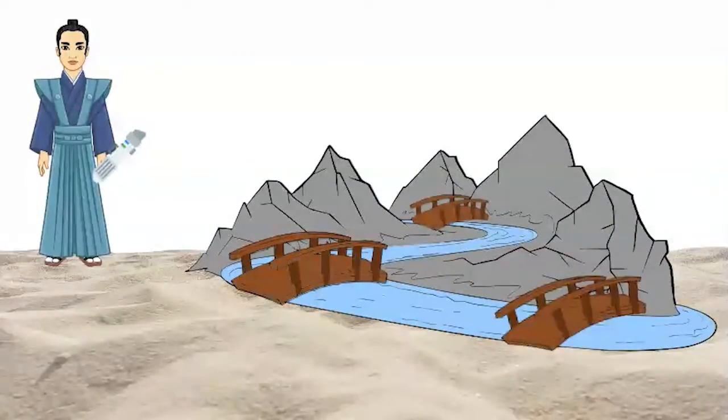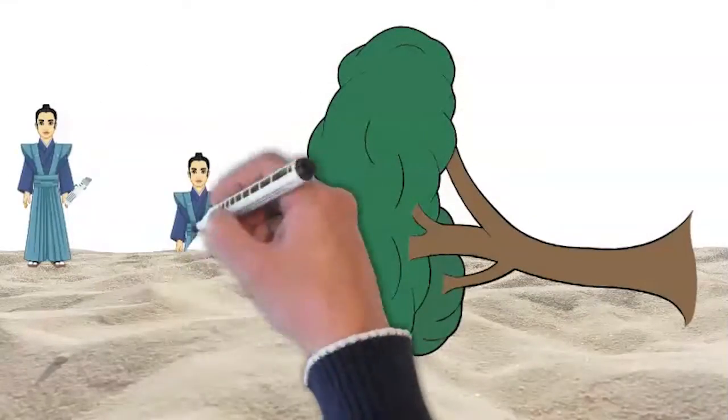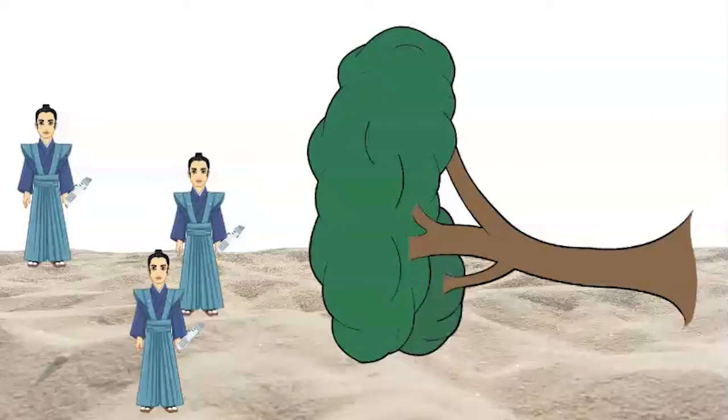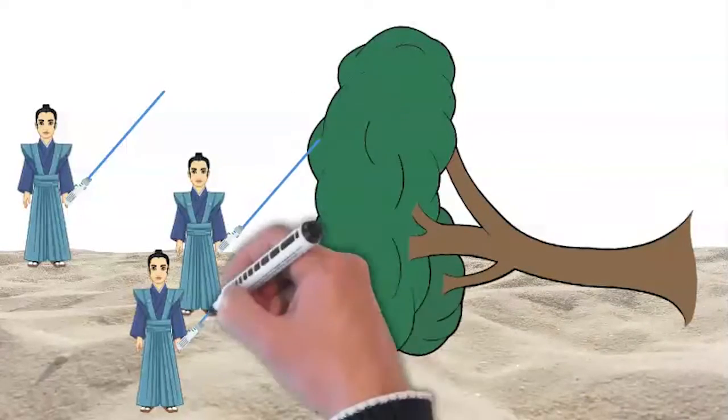Now for our heroes' next task. One-fifth of a giant fallen tree is blocking the main road to the settlement. How much of the tree should each of the three heroes clear away with their laser swords?